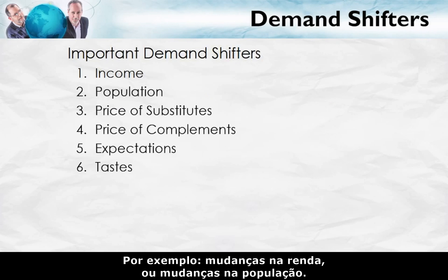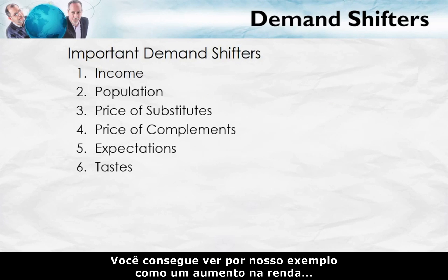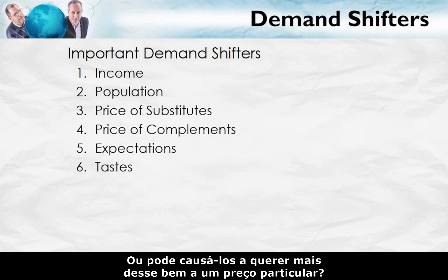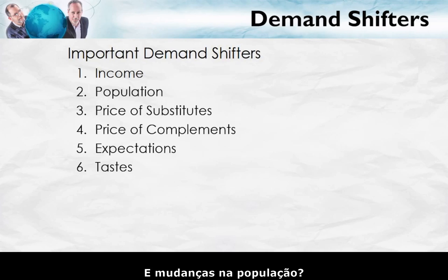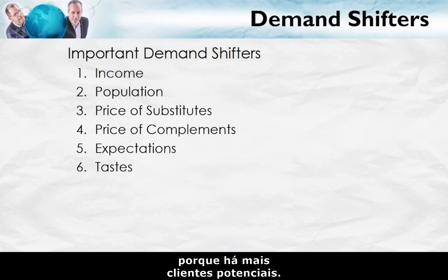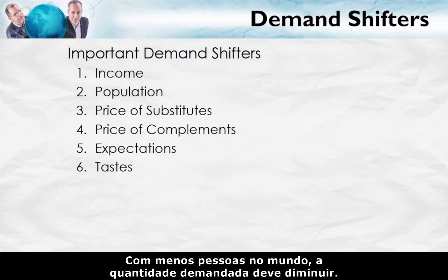For instance, changes in income and changes in population. Can you see how an increase in income might cause people to be willing to pay more for a given quantity of a good, or might cause them to want more of that good at a particular price? More people might increase the quantity demanded at a particular price because there are more potential customers. Fewer people in the world could decrease the quantity demanded.